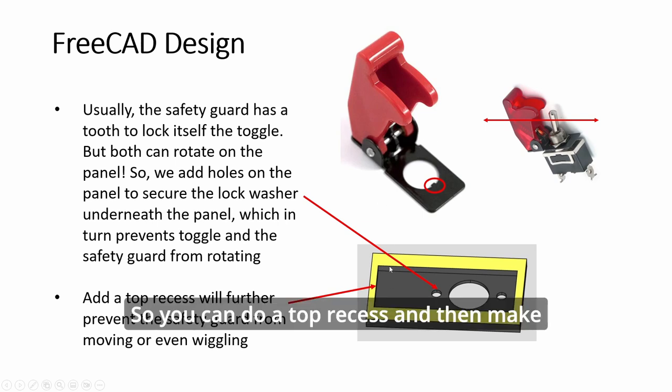So you can do a top recess and then make this plate here sit in it and it's not going to move. If it's not moving, then it will hold the toggle too.